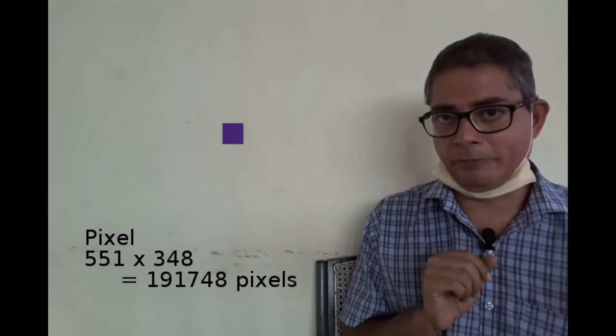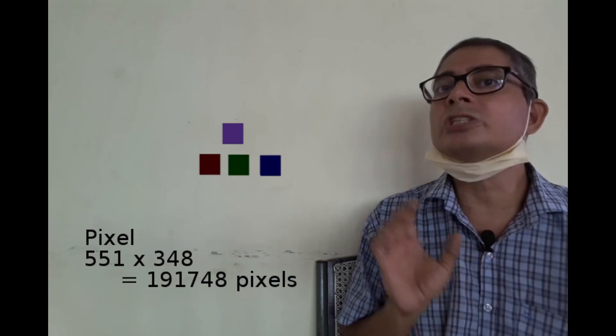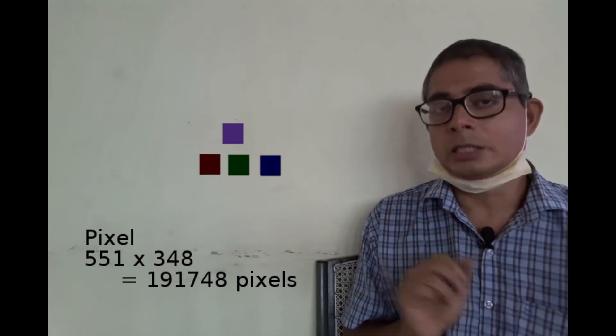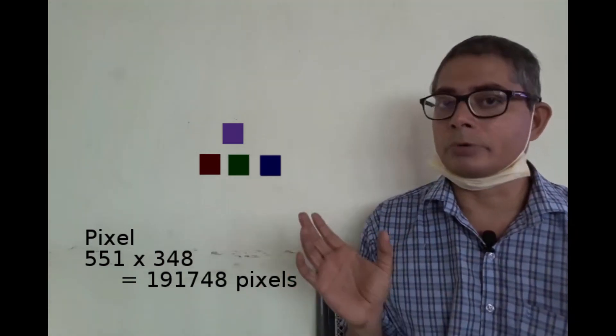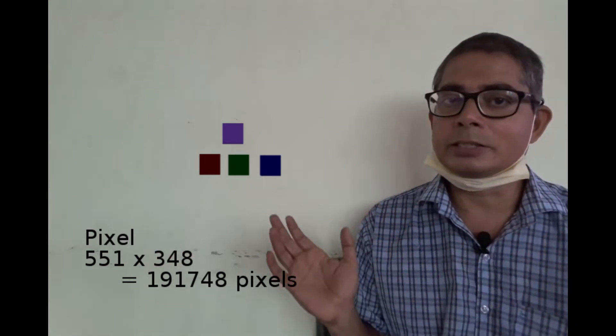This pixel, for example, is made of these three color components. The intensities of each component are from 0 to 255, darkest to brightest.